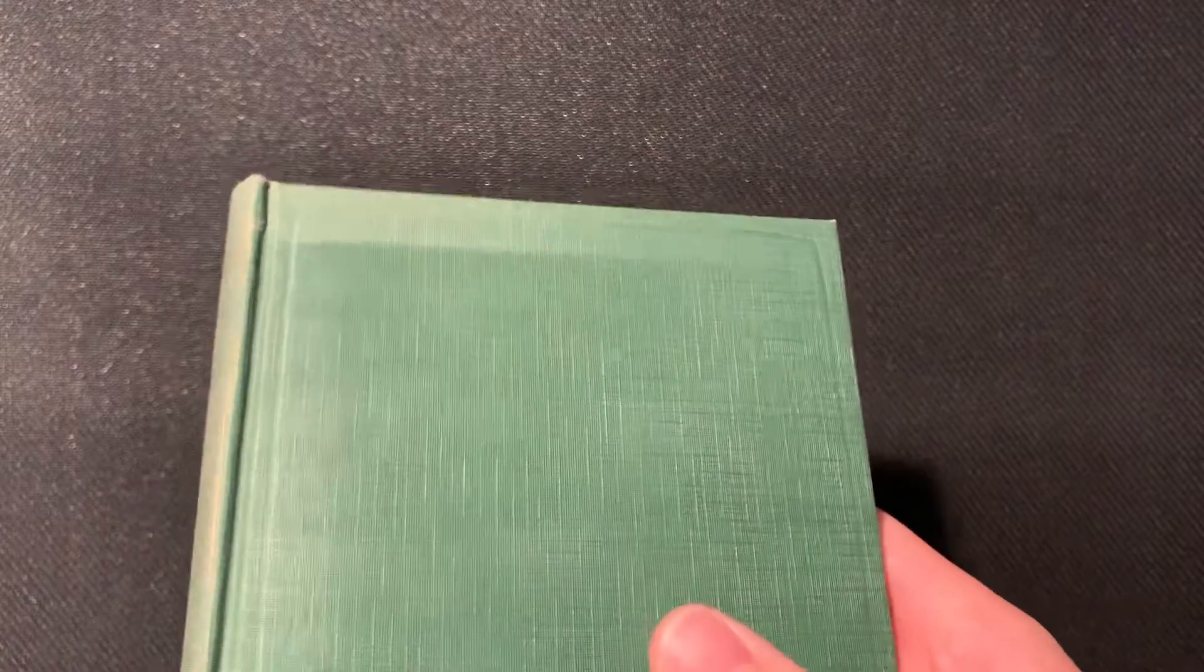And this is sort of interesting. There's this noticeable color difference here, presumably because there was a book next to this, and this part got exposed to the sun, so it matches the spine. And you can see more of the original color here.